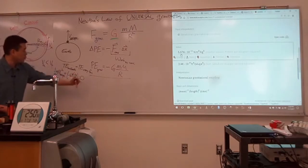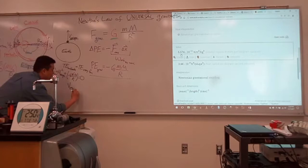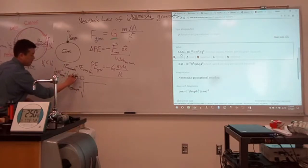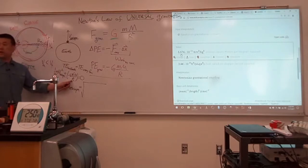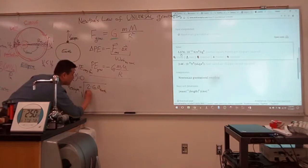So, let me solve for v_escape here. Move this over, multiply by 2, take the square root. Then, v_escape is equal to square root of G big M over r. It would be the radius of the Earth. So, 2 times G mass of the Earth divided by radius of the Earth.